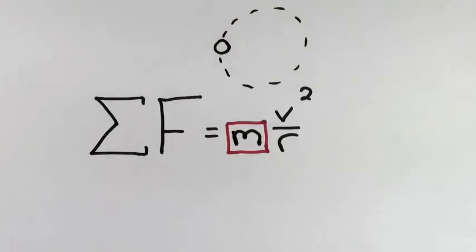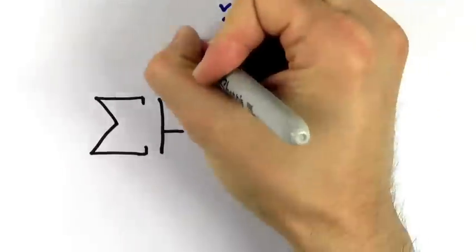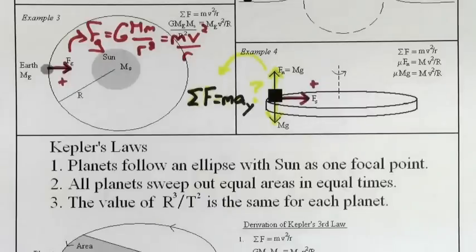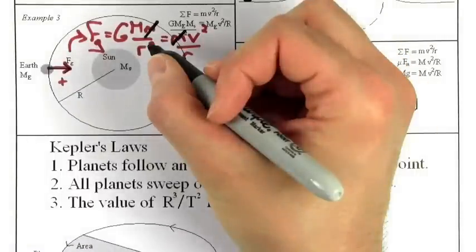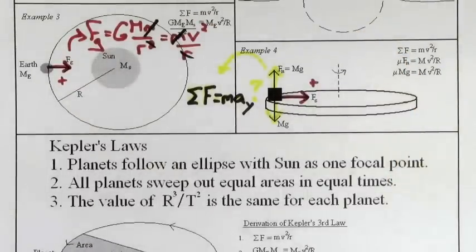Notice that the m in mv squared over r is always the mass of the object going in the circle. In this case, it's the Earth. Since the mass of the Earth is on both sides of the equation, we can cross it out. Similarly, we can get rid of one of the r's on each side of the equation, and then we can just solve for whatever it is the problem is asking us to find.